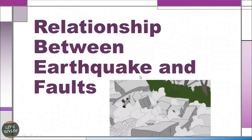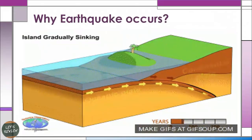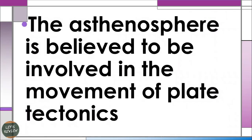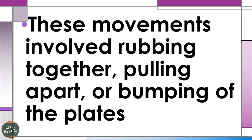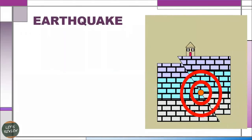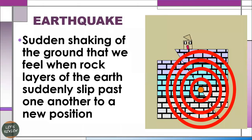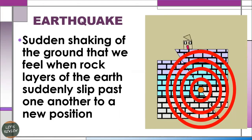What is the relationship between earthquake and fault, and why does earthquake occur? Generally, the asthenosphere is believed to be involved in the movement of plate tectonics. This movement involves rubbing together, pulling apart, or bumping off the plates. It creates mountains, volcanic activities, and even where the earthquake occurs. Earthquake is a sudden shaking of the ground that we feel when rock layers of the earth suddenly slip past one another to a new position.